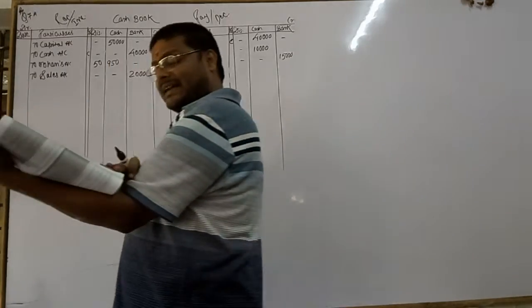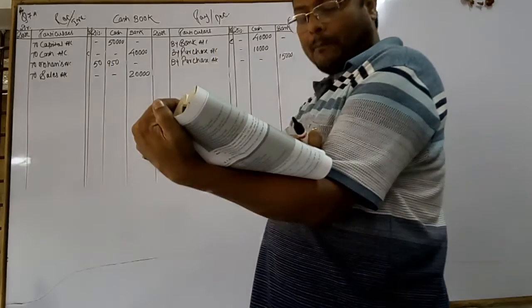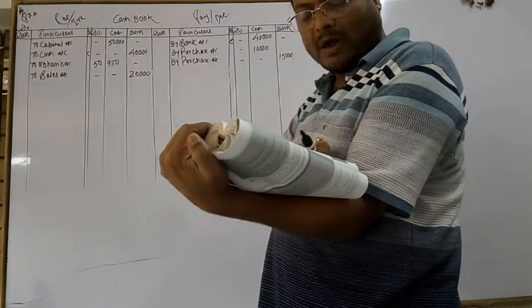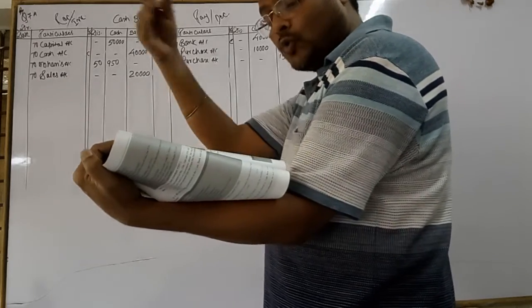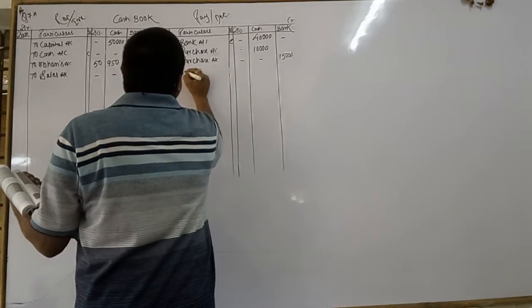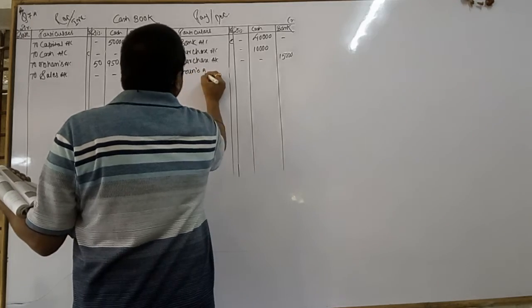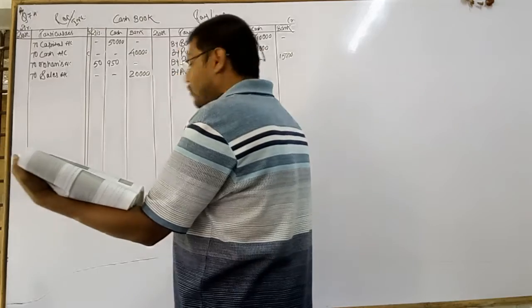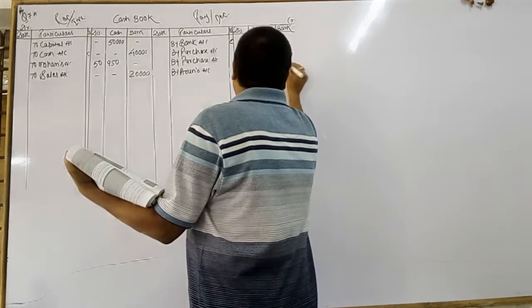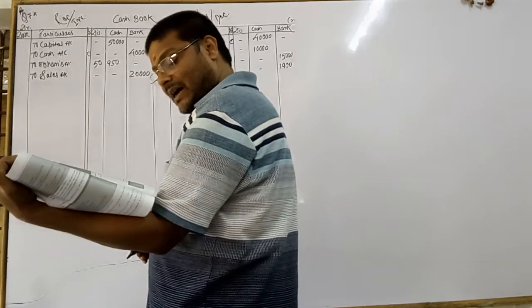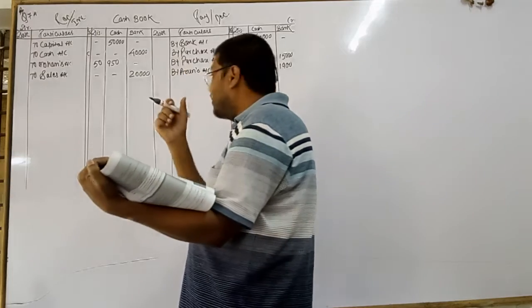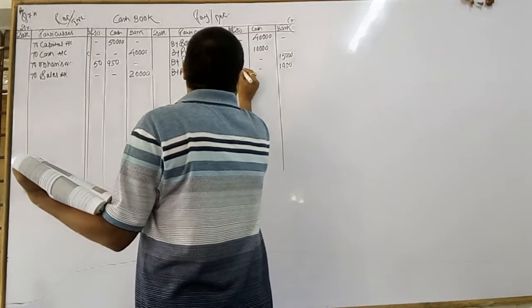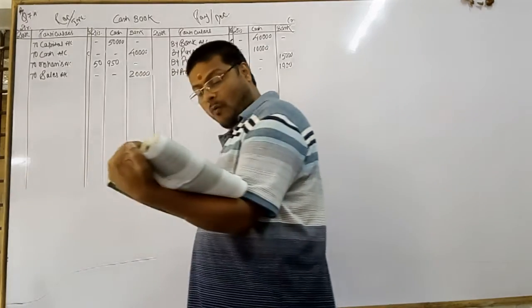Next sentence. Paid to Arun by check 1,900. Paid to Arun. To whom did we make payment? To Arun account. Payment made by check or cash. Paid by check 1,900 against, in full settlement of his amount rupees 2,000. Therefore, amount of discount 100.